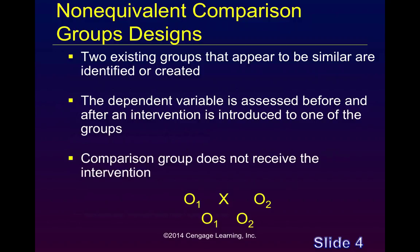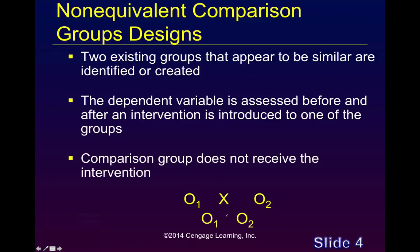Typically what we would see in an evaluation of a new intervention in a social services agency is that we have two existing groups — perhaps managed by separate teams or service units. We have trained Team A to implement the intervention, and we use the second group as the comparison group, which does not have the intervention symbol between the two observation points.